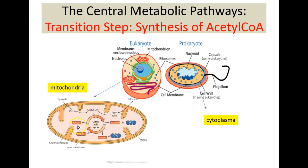Deep to the inner membrane there is a matrix. The citric acid cycle or Krebs cycle takes place in this inner space called the matrix of the mitochondria — the same space where the transition or intermediate step after glycolysis occurs. In prokaryotes, the Krebs cycle or TCA takes place in the cytoplasm of the cell.